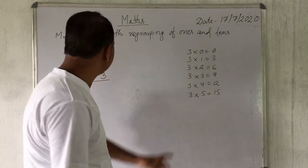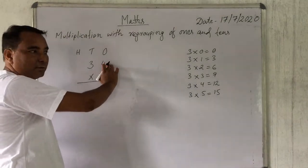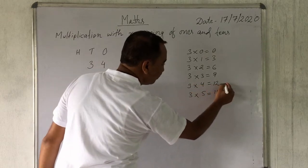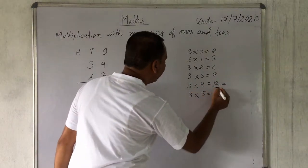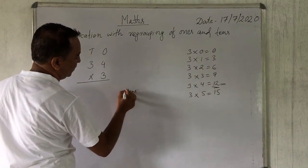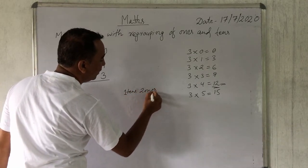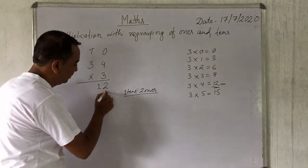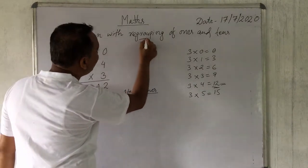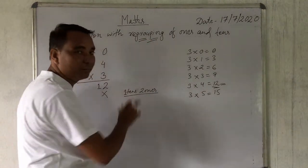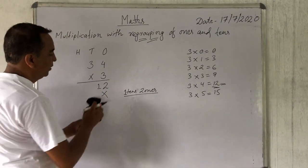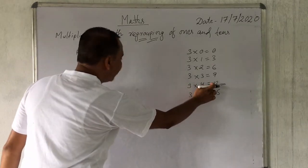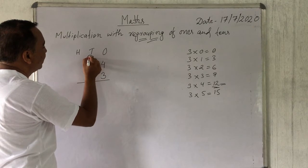Now, 3 four times. That means 3 added four times: 3 once is 3, 3 two times is 6, 3 three times is 9, 3 four times is 12. So 3 times 4 equals 12. Two digits came — that means 1 in the tens position and 2 in the ones. We cannot write both digits in the ones place — that is wrong. That is why we need regrouping. Out of 12, the 1 is in the tens place, so I keep 1 as a carryover in the tens place.